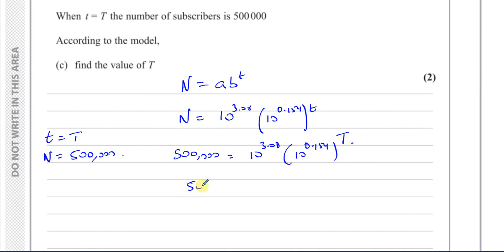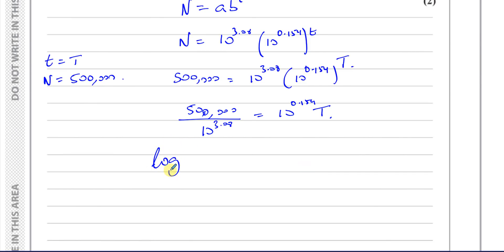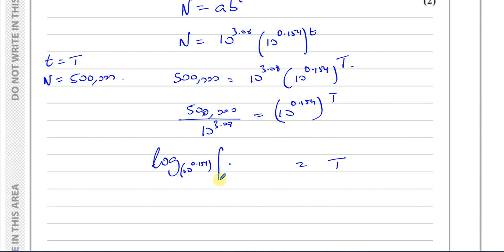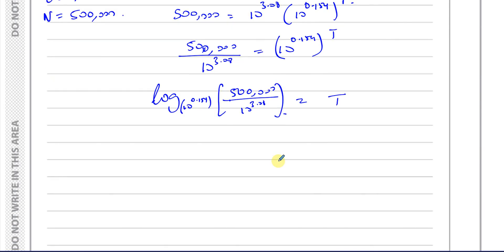To solve for T, I take log base (10 to the power of 0.154) of both sides. On the right-hand side I'm left with T; on the left I have log base (10^0.154) of (500,000 divided by 10^3.08). Putting this into the calculator gives 17.006..., so T equals 17.